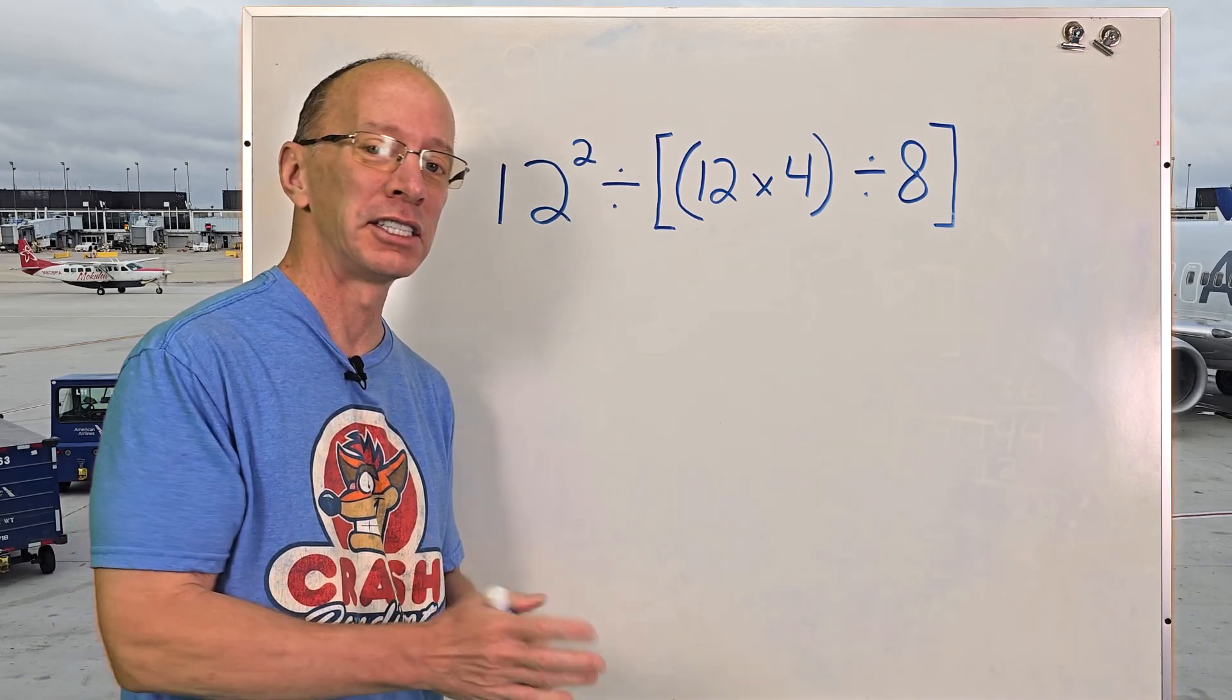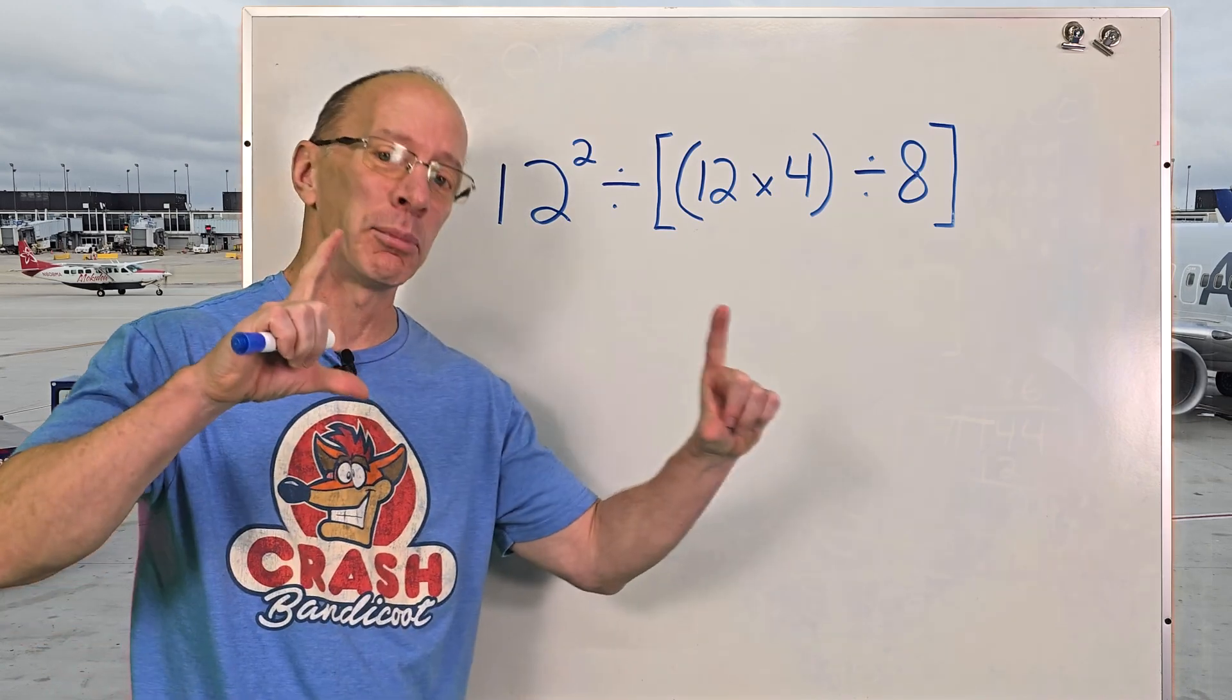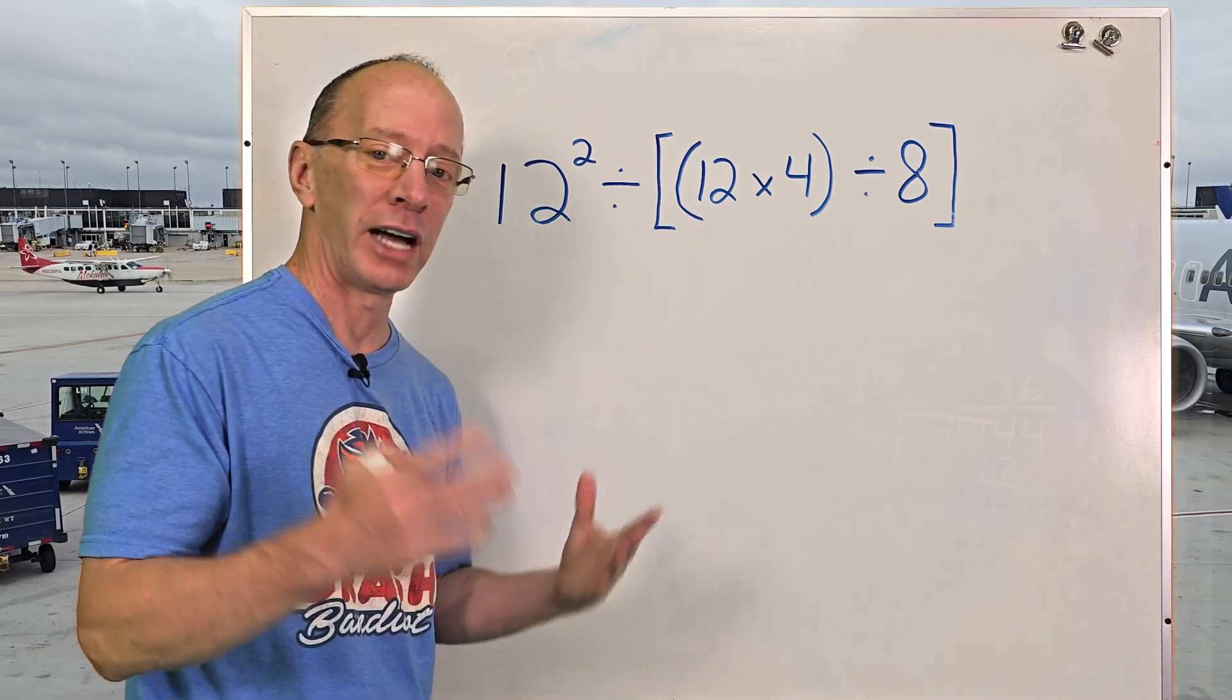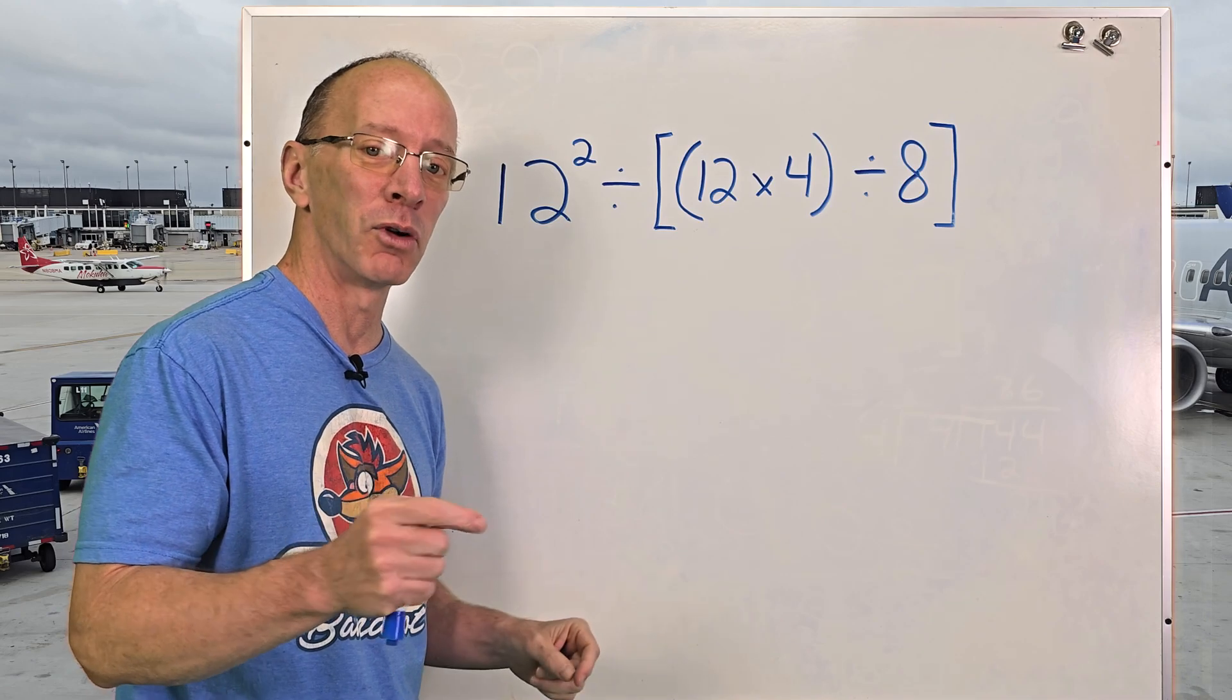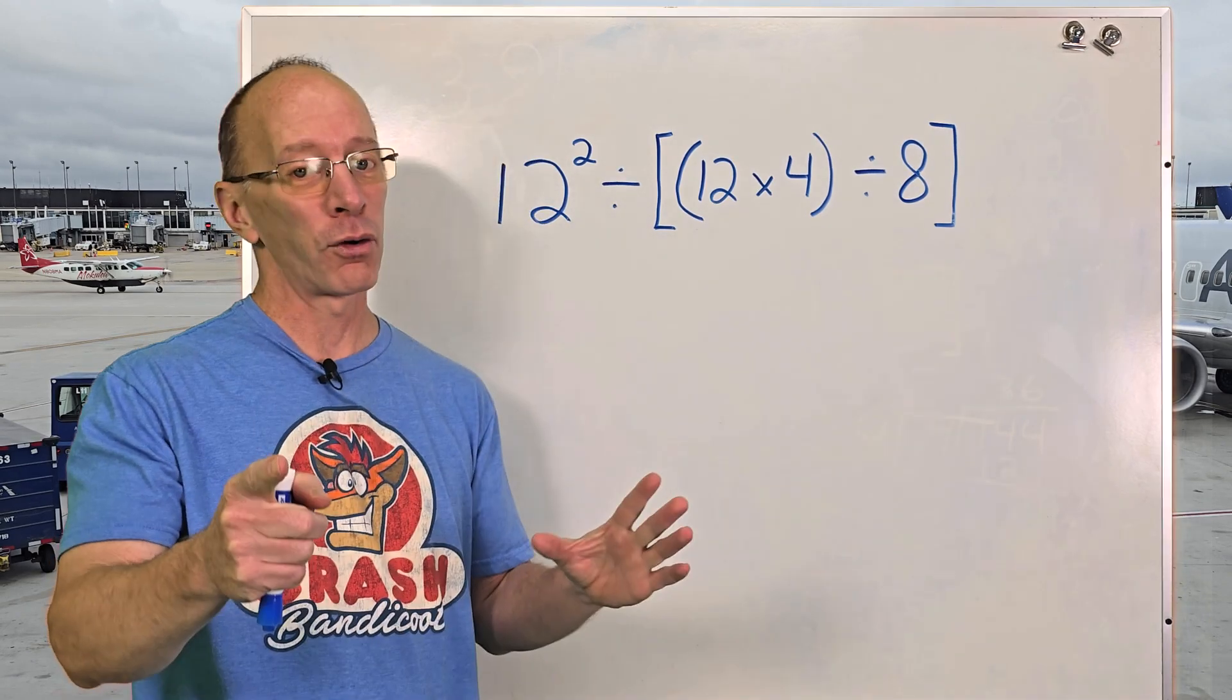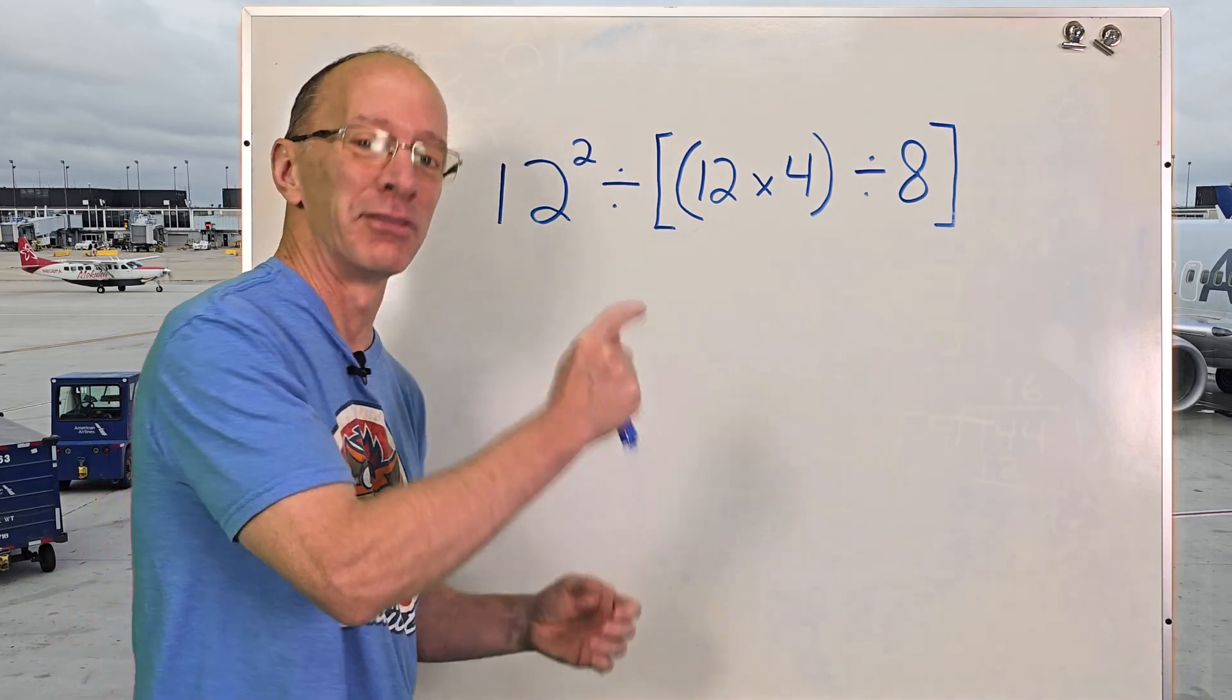When we do order of operations, there are four steps. The first step is you work inside parentheses or brackets. Our second step is if you have exponents, do the exponents. Our third step is multiplication and division from left to right. And our fourth step is addition and subtraction from left to right.